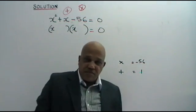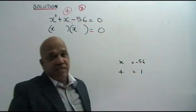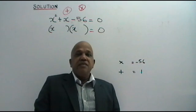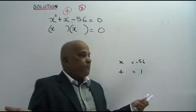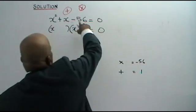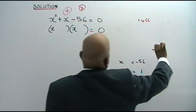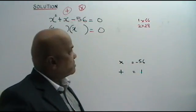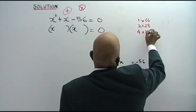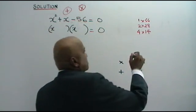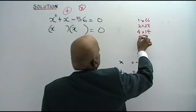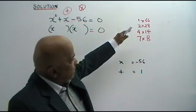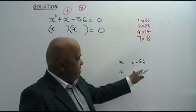That means one number is positive and one number is negative. When you add them together you get positive 1, so the bigger number is positive and the smaller number is negative. What are the possibilities for 56? 1 times 56, 2 times 28, 4 times 14, and 7 times 8. These are the possibilities — which pair will give us a product of negative 56 and a sum of 1?